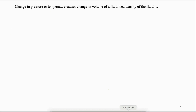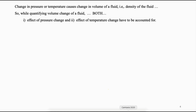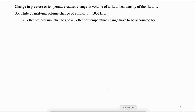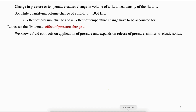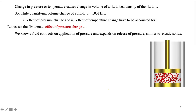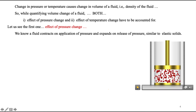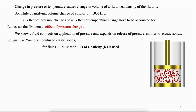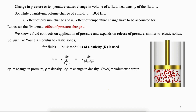Volume changes occur due to change in temperature or change in pressure. For example, increase in temperature or decrease in pressure expands the fluid. While quantifying the change in volume of a fluid, the effect of pressure change and the effect of temperature change have to be accounted for. A fluid shrinks on application of pressure — pressure and volume are inversely related — and the same fluid expands on release of pressure, similar to elastic solids. On similar lines to Young's modulus for elastic solids, bulk modulus of elasticity for fluids is used to quantify the compressibility of a fluid.